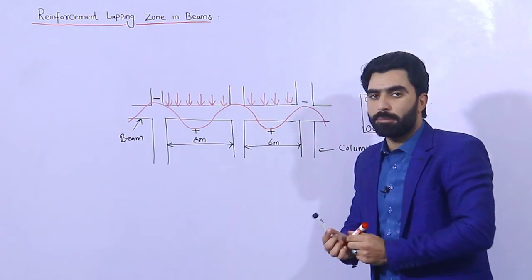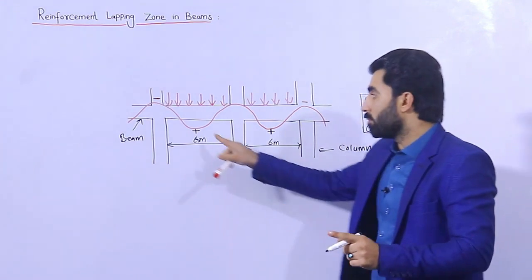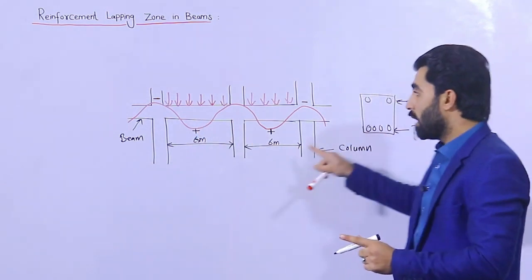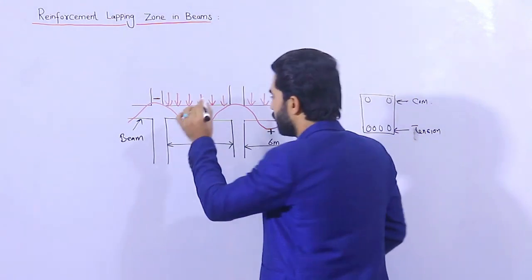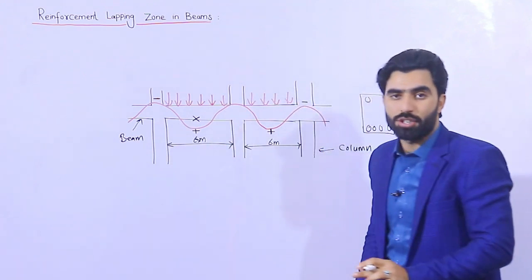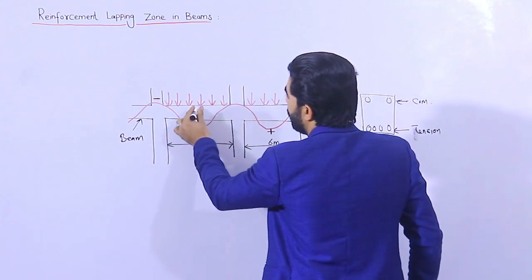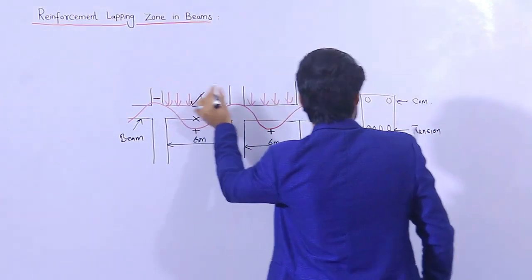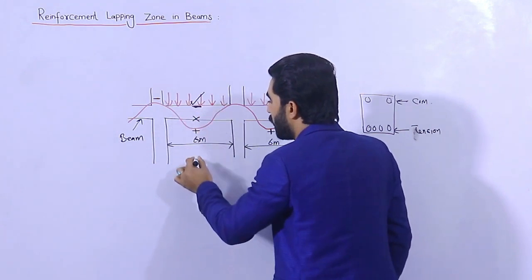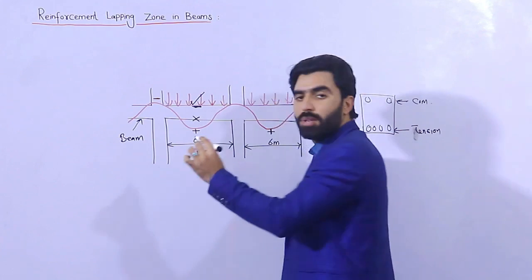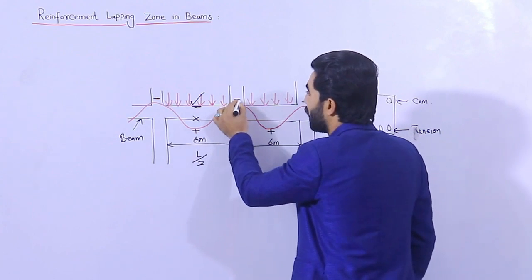Remember guys, the lapping is not allowed at the bottom of the beam in the tension zone. Lapping is not allowed to be provided at the middle here, because we have positive bending moment and a tension zone. But in the compression zone, you are able to provide lapping at the top portion. So at this portion you can provide lapping length. The total length should be divided by two — L divided by 2 — so the lapping should be provided at the middle and top portion, not at the bottom portion, because here we have negative bending moment.